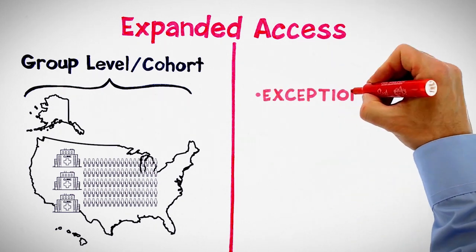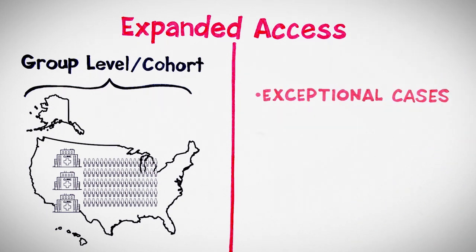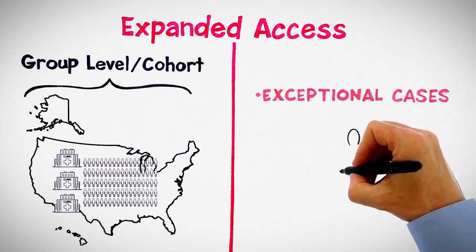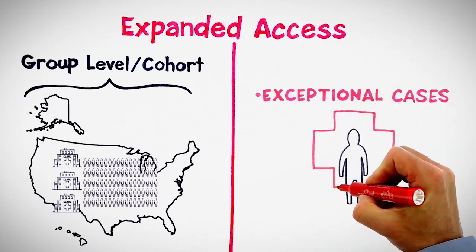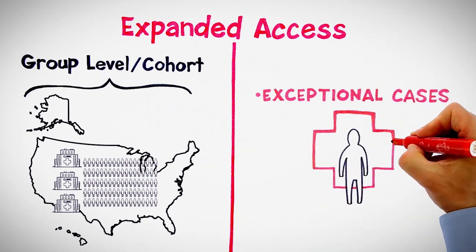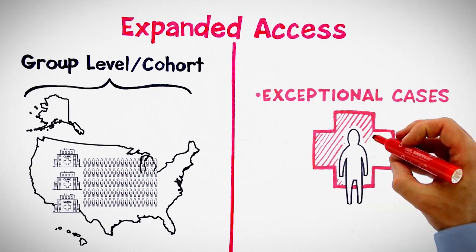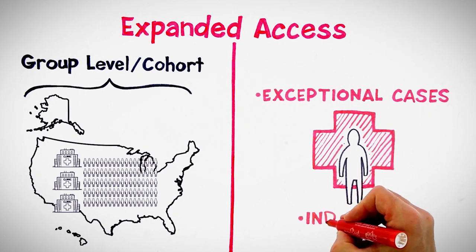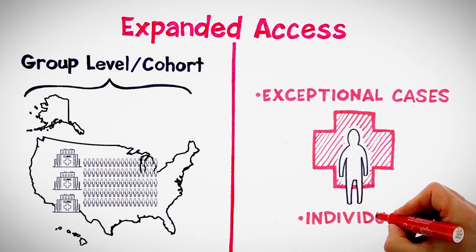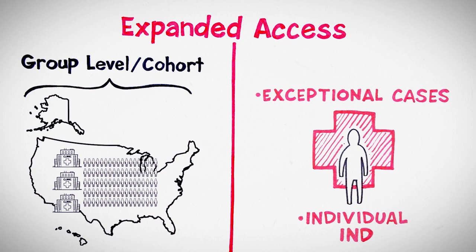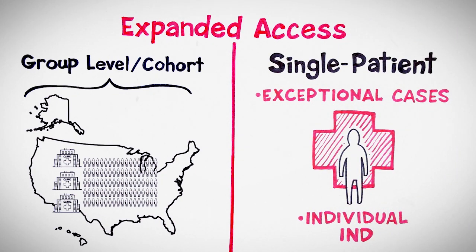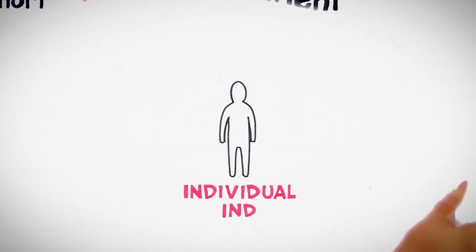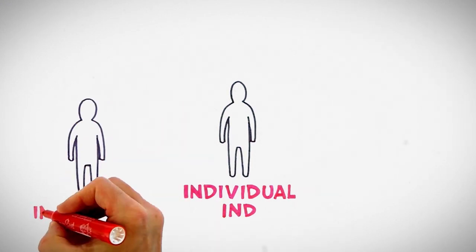The other side of the page is for exceptional cases — patients who don't fit into a definable group. A patient affected by several serious conditions at the same time, or someone with an ultra-rare condition that's outside of the indication the drug is being developed for. One-offs like these are what the individual IND was created for. We also call this single-patient expanded access — these are trials of one, so they don't enroll like a big clinical trial.